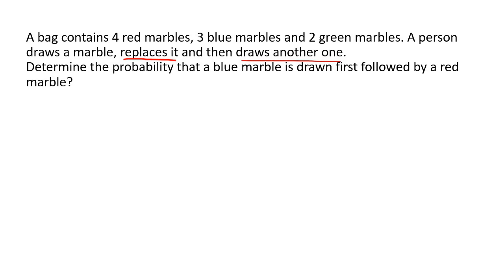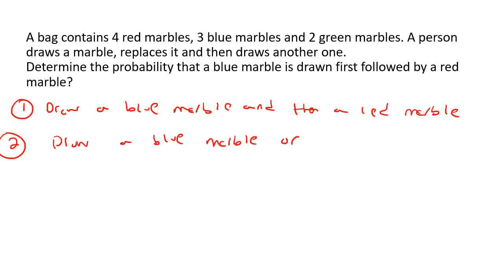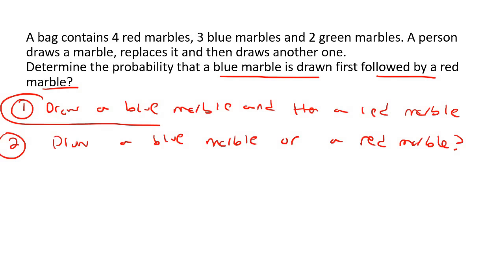There is no explicit word 'and' here, but you can make sense of this. Does the question want us to draw a blue marble or a red marble? The question says: determine the probability that a blue marble is drawn followed by a red marble. So they want both — blue and then red. That means we use 'and', so we multiply. The word 'and' versus 'or' is very important. If you ask for a sandwich and a chocolate, you get both. If you ask for a sandwich or a chocolate, it's just one or the other. Here they say blue and then red, so it must be both.